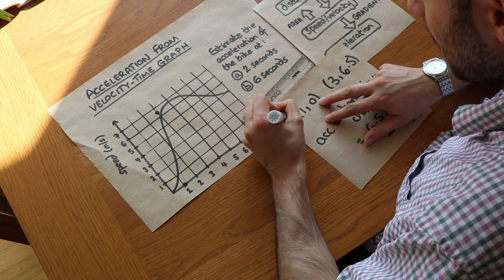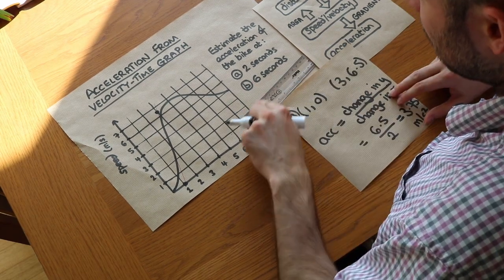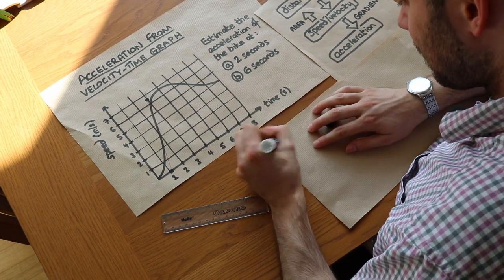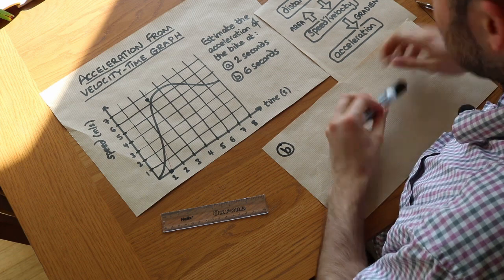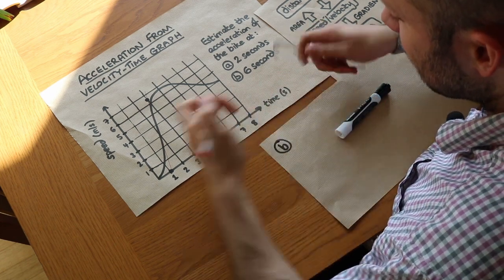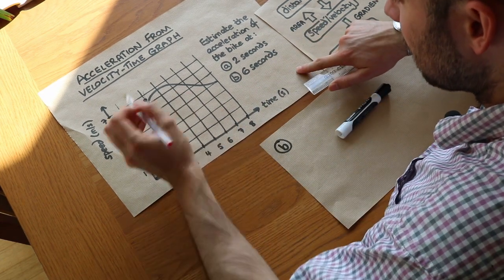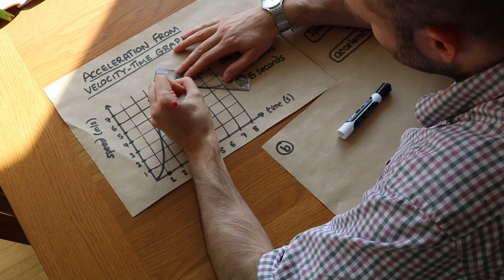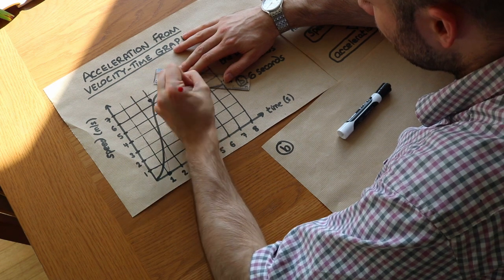and now we need to do part B. We need to find acceleration at 6 seconds, so here. So let's do that again. We're going to draw the tangent when the time is 6. So it's here, and we can see we can get the ruler pretty straight against a line here. So let's draw that line.